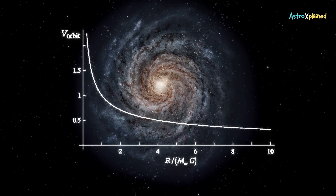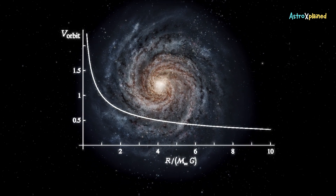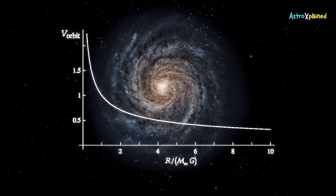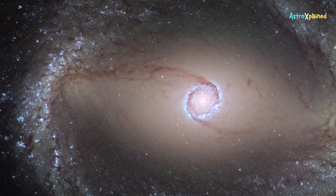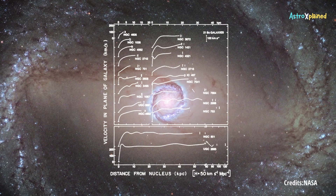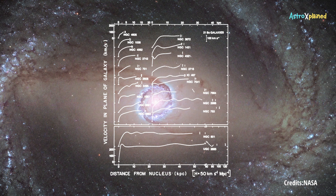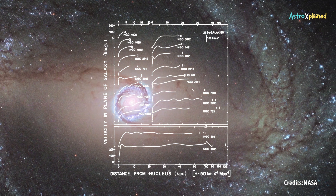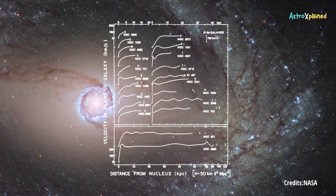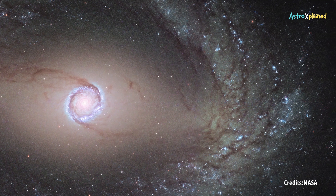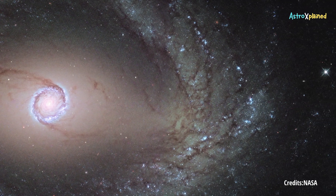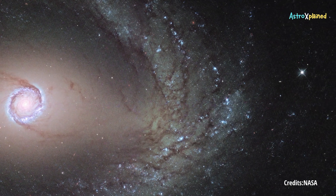Classical Newtonian dynamics predicts that the rotational velocity of stars decreases as we move further out from the center. However, observational data revealed that it remains approximately constant at large radii, suggestive of a massive, extended, and non-luminous mass. This unseen matter provides the additional gravitational force needed to keep the outer regions rotating at those speeds.